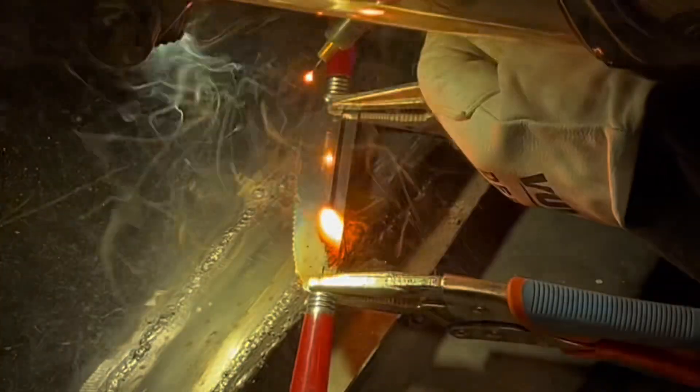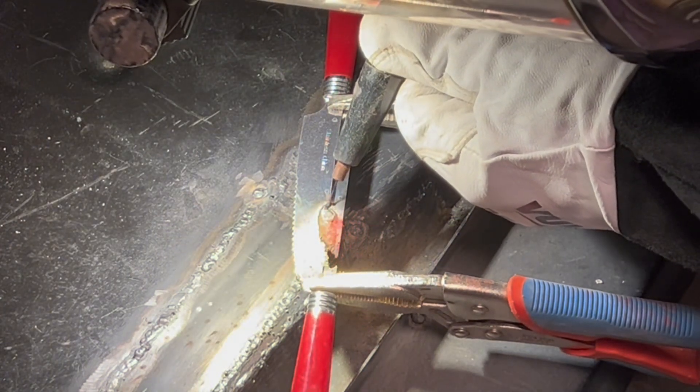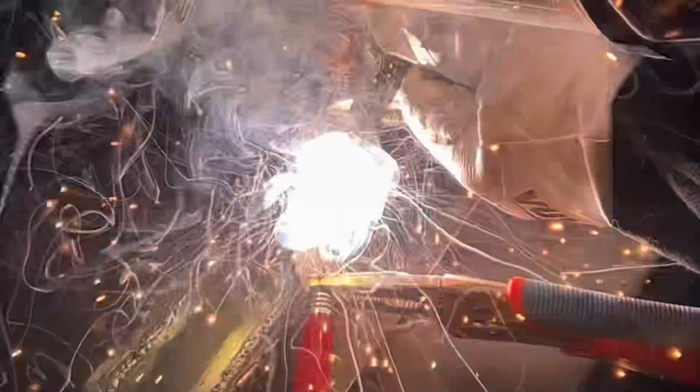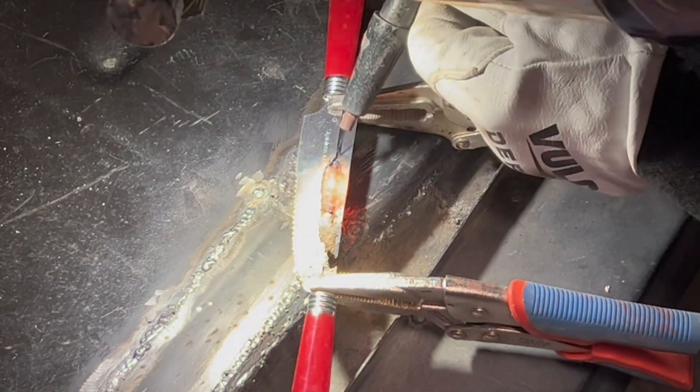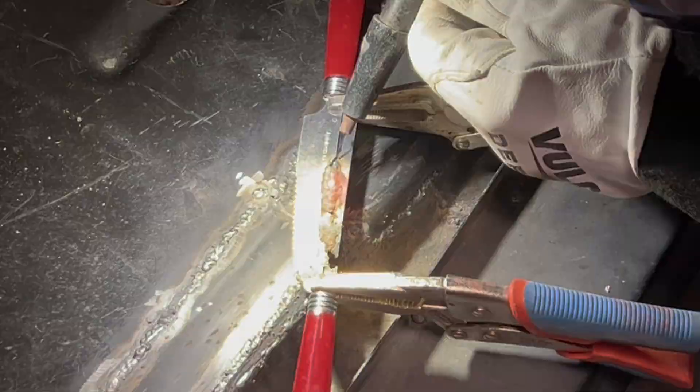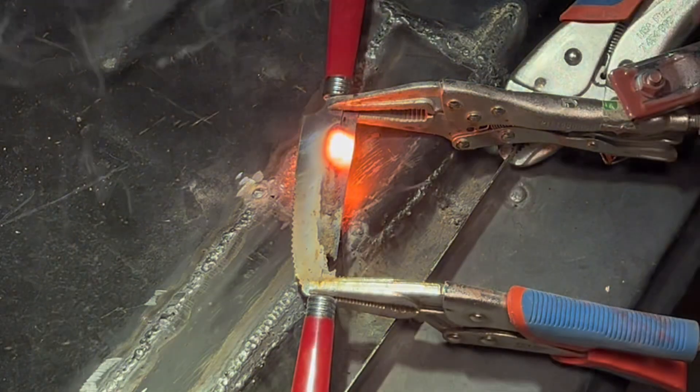I wouldn't do this on 19 gauge steel on a car patch or something like that on the outside because it would warp the crap out of it. You can tell by the heat signature left behind when I stopped welding. The thing is orange hot and stays hot for a long time. So you can bet your bottom dollar that if you do that on a panel on a car, it's going to warp the crap out of it.